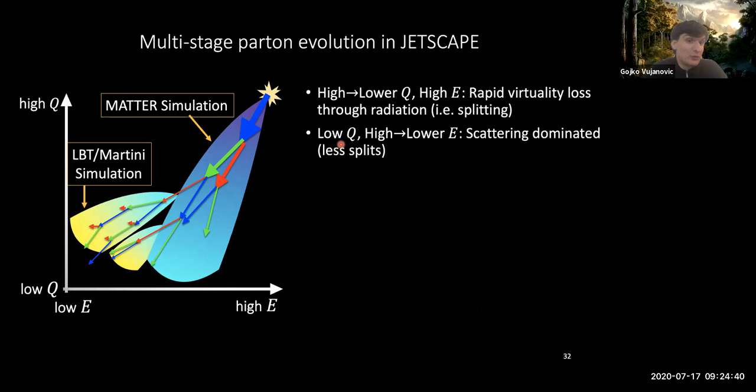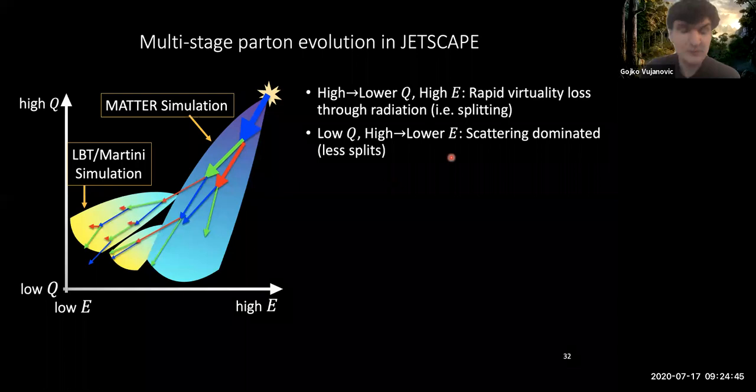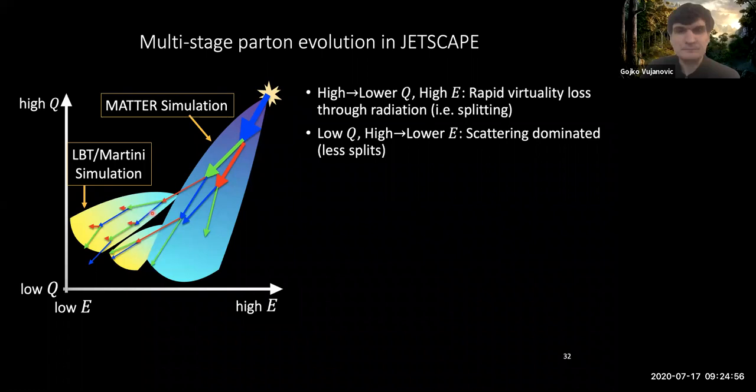Now you can still radiate in this lower virtuality region because scattering can sometimes promote the virtuality of the partons, so you can gain virtuality by this process. So you can still radiate a little bit, but you're mostly going to be dominated by what is happening in terms of scatterings with the quark-gluon plasma.